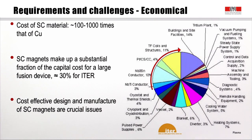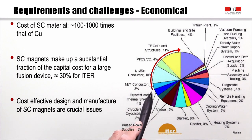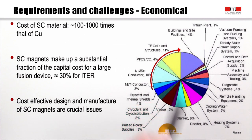Finally, there are economical challenges. The cost of superconducting materials is about 100 to 1000 times that of copper. As a consequence, superconducting magnets make up a very substantial fraction of the total cost of a large fusion device. In the ITER cost breakdown, conductors for superconducting magnets — Nb₃Sn, NbTi — and other coil structure elements together amount to about 30% of the capital cost. Cost-effective design and manufacture of these magnets are absolutely crucial issues.